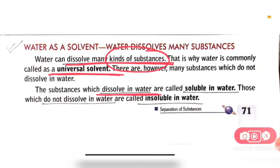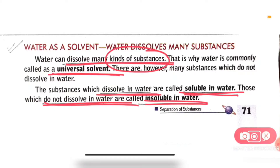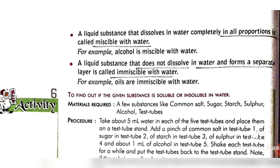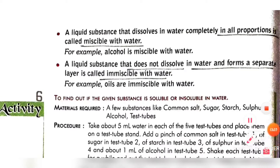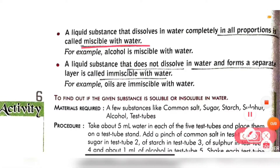Apart from that, there are several substances which do not dissolve in water. The substances which dissolve in water are commonly known as soluble in water, like salt and sugar. Those which do not dissolve in water are called insoluble in water, like chalk and sand. So there are soluble elements and insoluble elements.